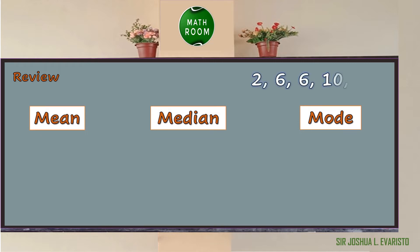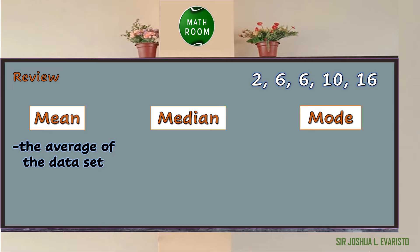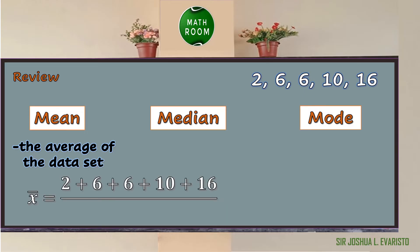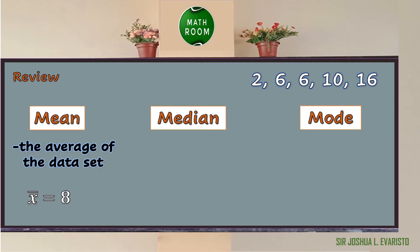Consider the data set: 2, 6, 6, 10, and 16. The basic purpose of the measures of central tendency is to gain more knowledge and deeper understanding about the characteristics of a data set. The mean represents the average of the data set. This can be solved by adding all the data and dividing by the total number of data. In our example, we have 5 total data points: 2 + 6 + 6 + 10 + 16.